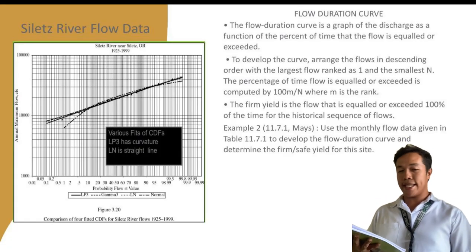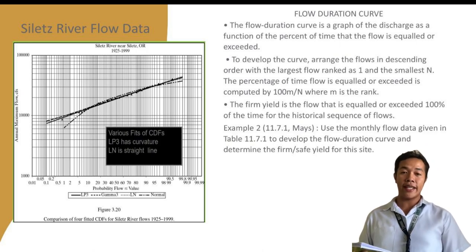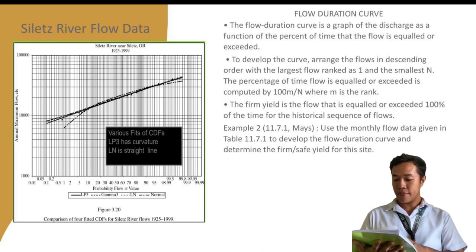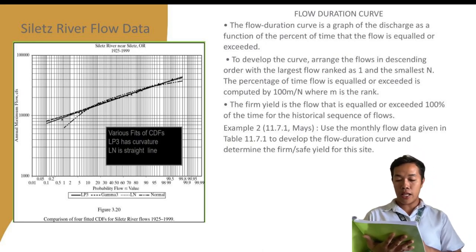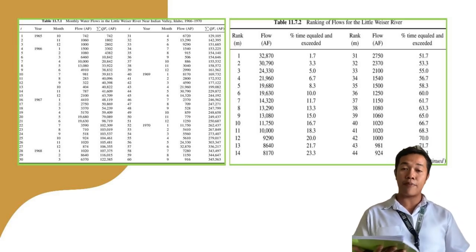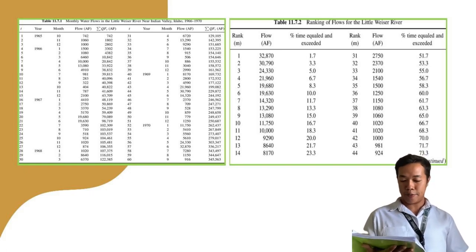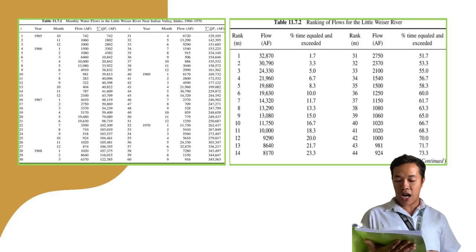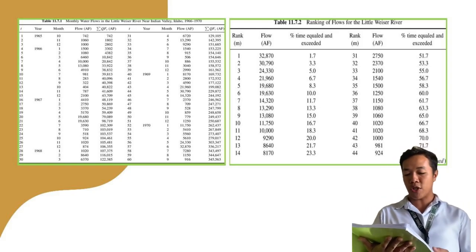The Solis River Flow data is a comparison of four fitted CDFs for Solis River flows from 1925 to 1999. Solis River Flow data represents measurements of the amount of water passing through the river at different points, typically expressed as volume per unit time such as cubic feet per second or gallons per minute. Flow data is crucial for water resource management, flood forecasting, environmental monitoring, and recreational activities.